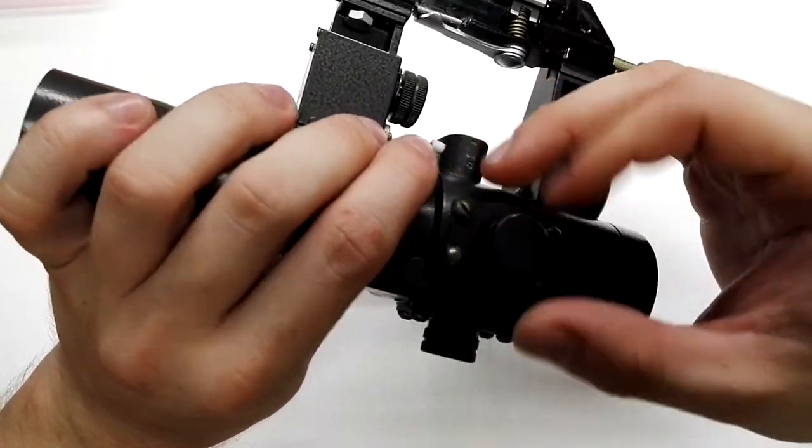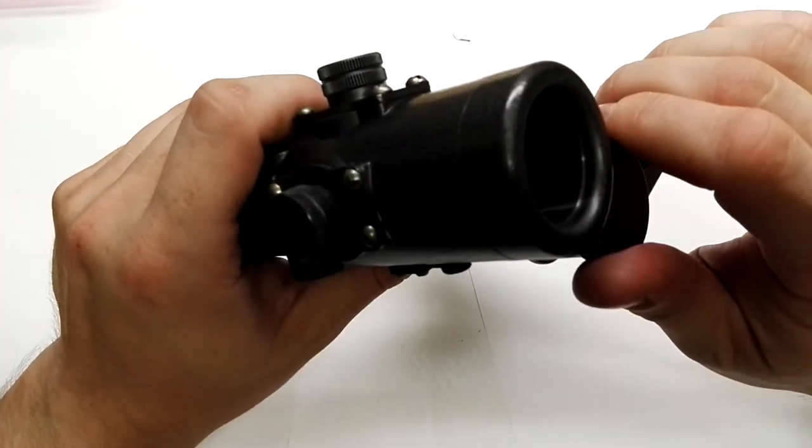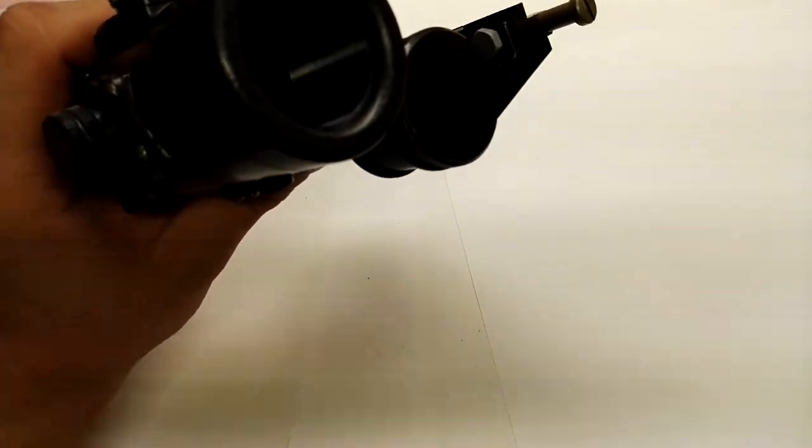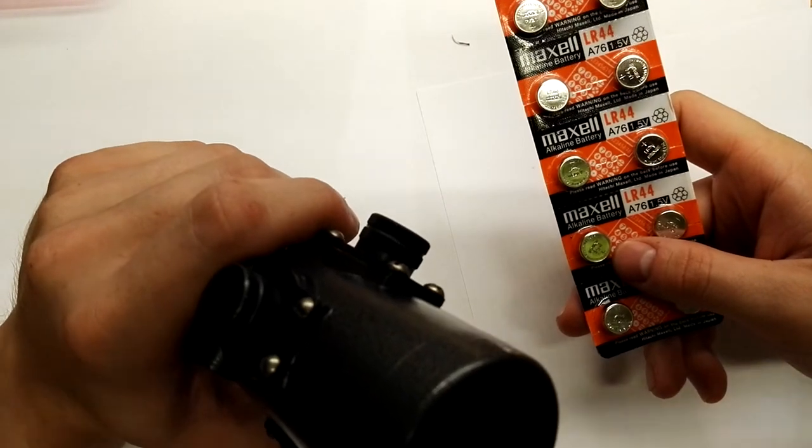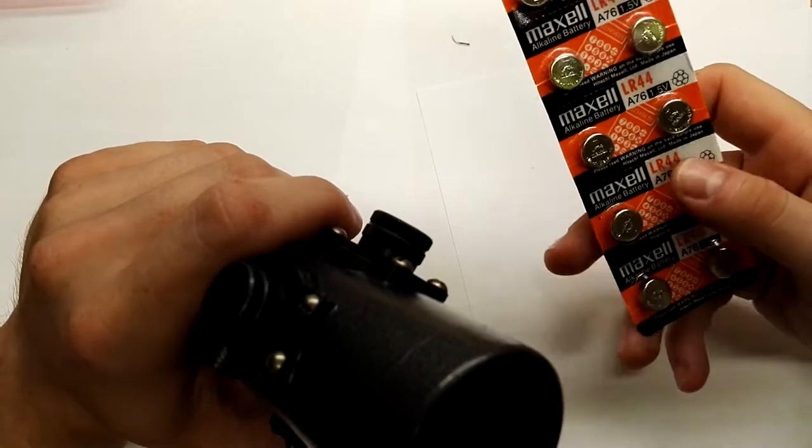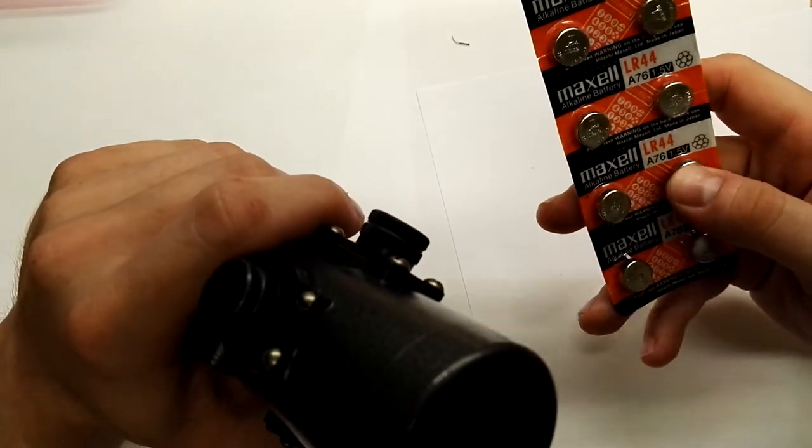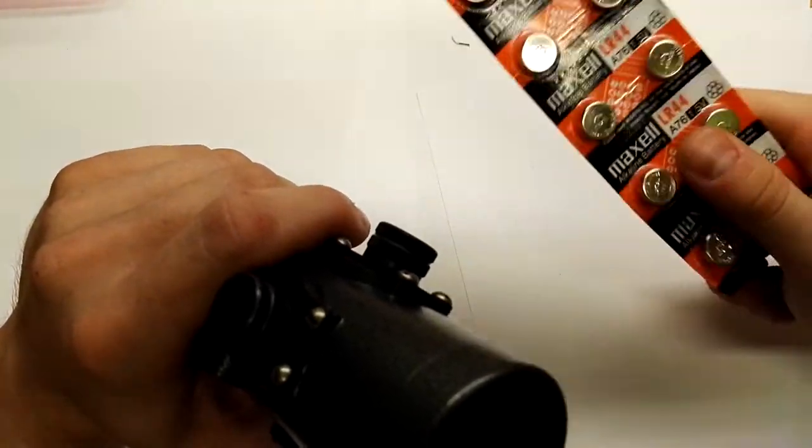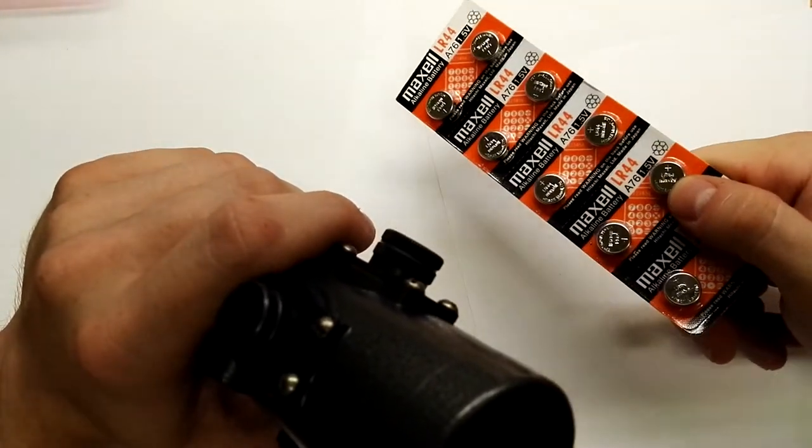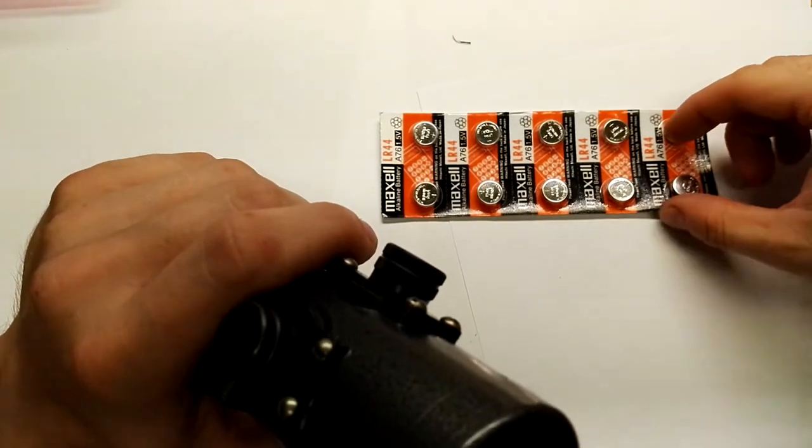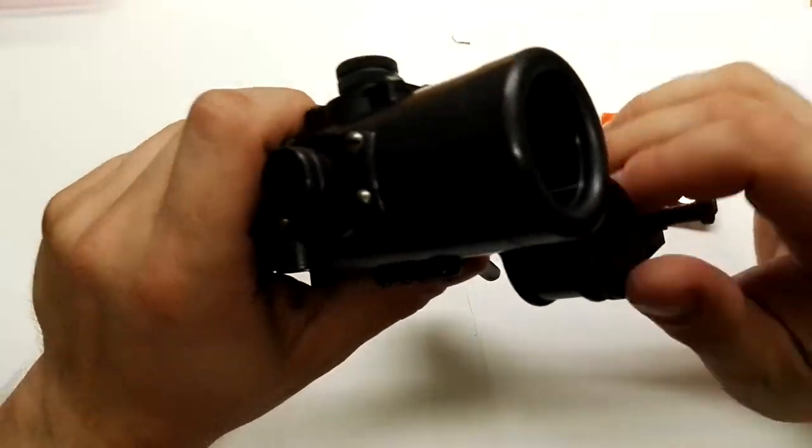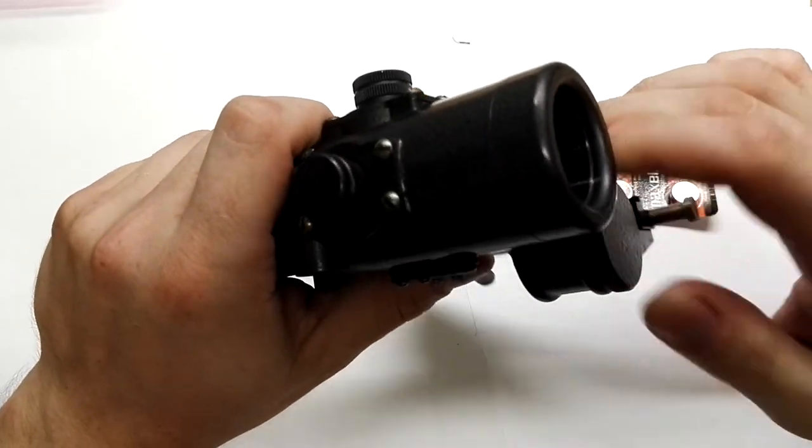The batteries are LR44 - these are quite cheap, you can get 10 pieces for five dollars. Two pieces go into the scope.